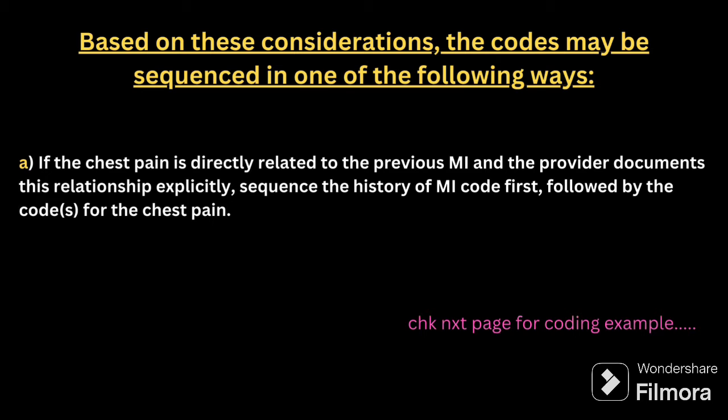First, if the chest pain is directly related to the previous MI and the provider documents the relation explicitly, then the chest pain is clearly related to the MI. In this case, if the chest pain is related to the history of myocardial infarction, then the history of myocardial infarction should be the primary code. You should read the question very carefully. In this case, history of MI should be the primary code and chest pain should be the secondary code.